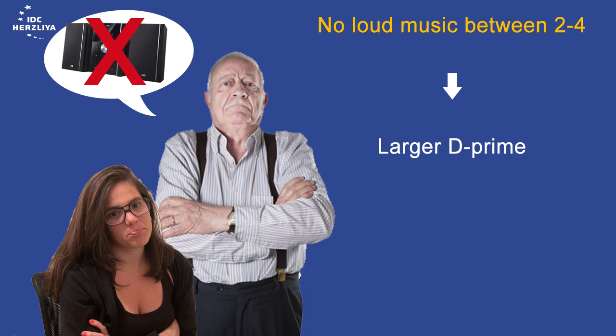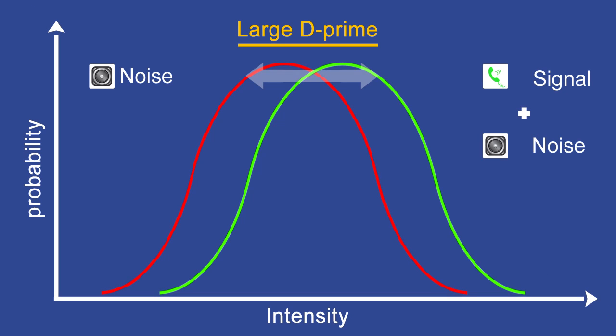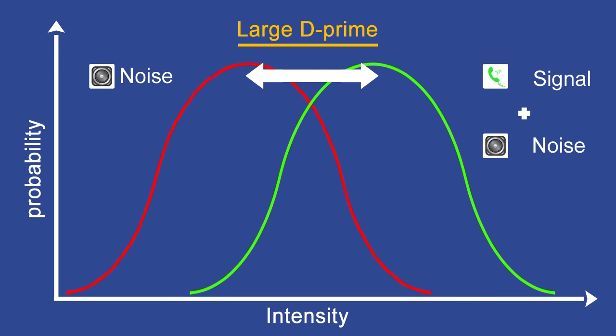The D'prime will become larger, and we have more hits, and we have more correct rejections. The signal becomes more discriminable than the noise, and the gap between the two functions gets larger.